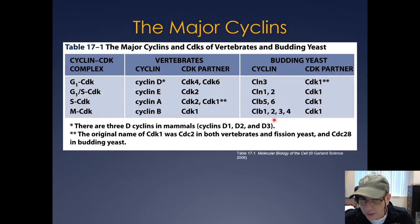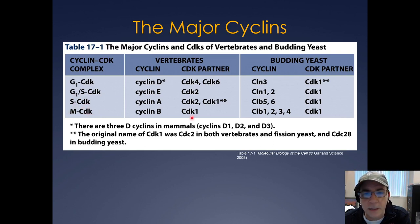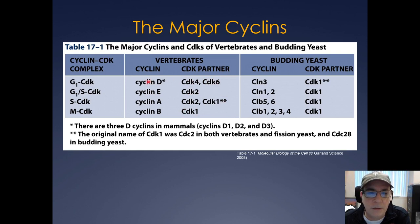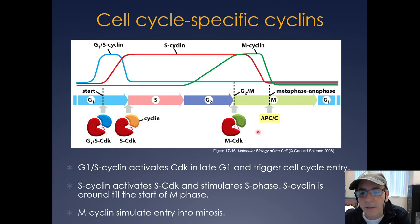Here are the major cyclin-CDK complexes in the cell: there's a G1 CDK, a G1-S CDK, an S cyclin-CDK, and an M cyclin-CDK, along with the cyclins and CDK partners involved. You don't need to know all the exact gene names, but you should know these different cyclin-CDK molecules. It's fine to just call them the G1-S CDK, the S CDK, and the M CDK.